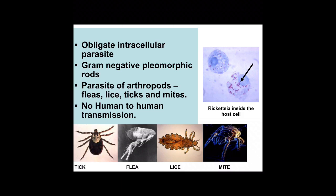Rickettsia are obligate intracellular parasites. They are gram-negative, pleomorphic, non-motile rods. They are parasitic to arthropods such as fleas, lice, ticks, and mites. Rickettsia cannot grow on standard cell culture media, but can grow well in the egg yolk of embryonated eggs and several monoclonal cell culture lines. There has been no human-to-human transmission of the infection.